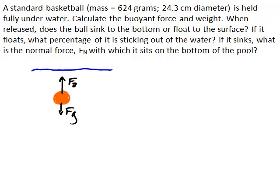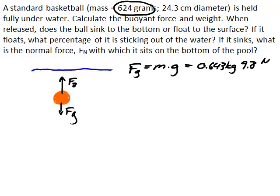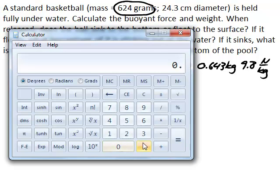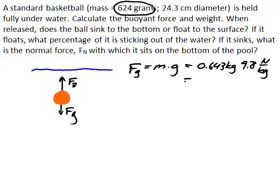Well, let's start off by calculating the weight. That's probably the easiest thing to start with. Our standard equation for weight is mass times little g, and the mass is given to us as 624 grams. Now we need to have that in kilograms, in other words, it's 0.643 kilograms times 9.8 newtons per kilogram. And that gives us 6.3 newtons.